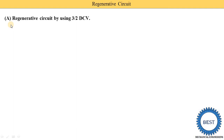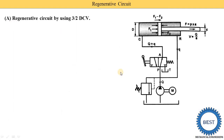Now we understand the first type of regenerative circuit — the regenerative circuit by using a 3 by 2 DCV. Here you see the basic components: a pump, a motor to run the pump, a reservoir, a pressure relief valve, and a 3 by 2 DCV. It is a 3 by 2 DCV because it has two squares (two positions) and in every square there are three ports: P port, A port, and T port. It is manually operated with spring return. This is a double-acting cylinder; C is the cap end port and R is the rod end port.